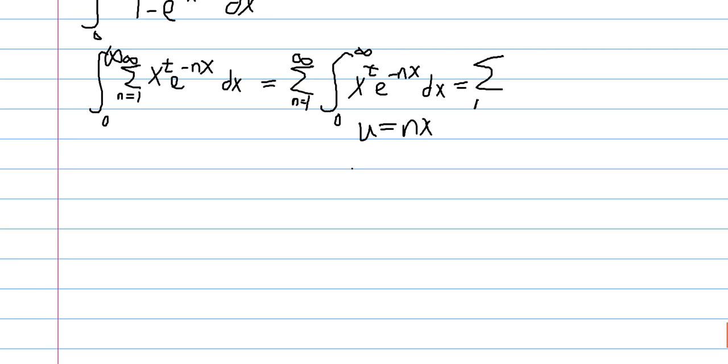So now we have sum, n goes to 1 to infinity. If we plug in x equals u over n into this, we get u to the t over n to the t, and our dx is equal to du over n, so we get 1 over n to the t plus 1. And then nx is u, so we get e to the negative u du.